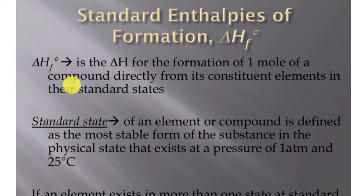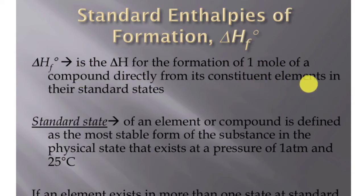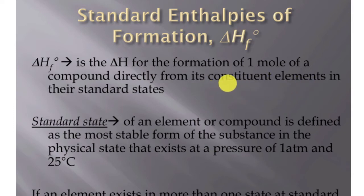Standard enthalpies of formation looks at how much enthalpy is needed to form a substance from its elements at what are known as standard conditions, or standard states. The change in enthalpy of formation is to form one mole of a compound directly from its constituent elements — constituent just means the elements that make it up. For carbon dioxide, that would be carbon and oxygen, in their standard states.